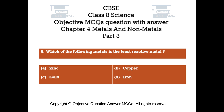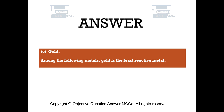Question number 6. Which of the following metals is the least reactive metal? Option A: zinc. Option B: copper. Option C: gold. Option D: iron. The right answer is option C. Gold. Among the following metals, gold is the least reactive metal.